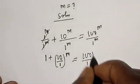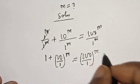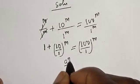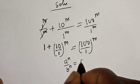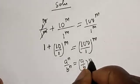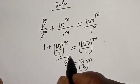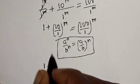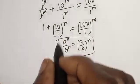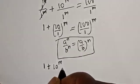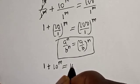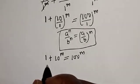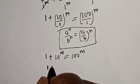That is from this rule: if you have a raised to power n over b raised to power n, this is equal to (a over b) to the power of n. So that is how we got 1 plus 10 divided by 1, that is 10 raised to power m, is equal to 100 raised to power m.